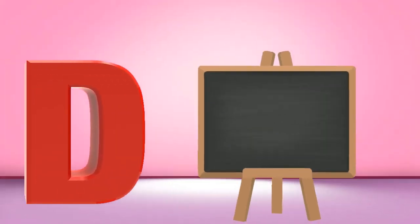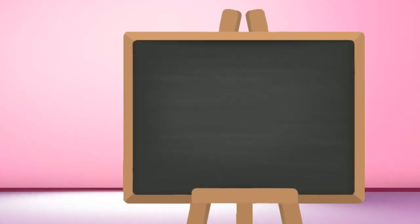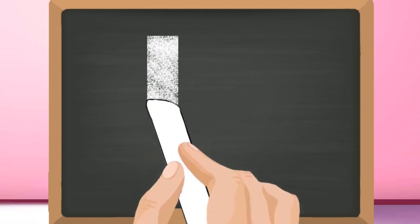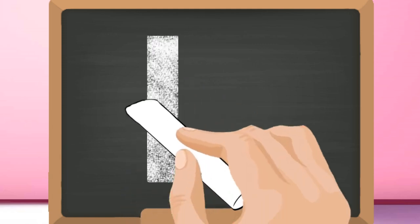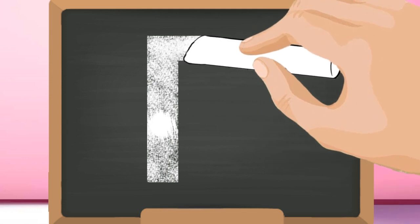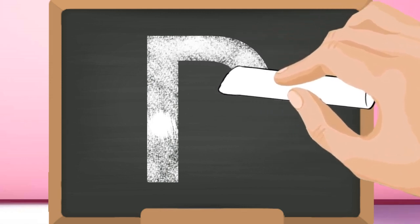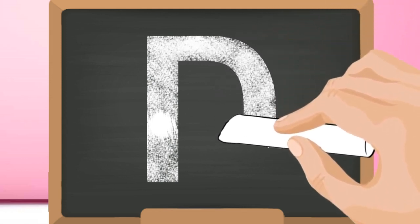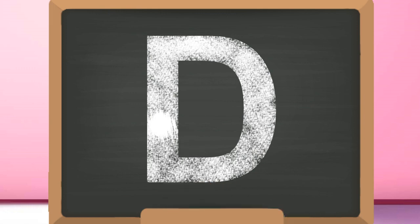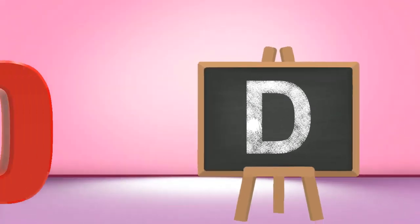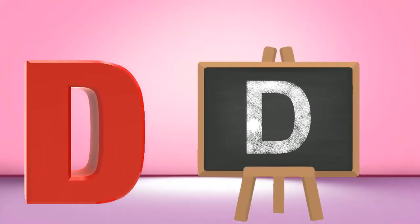D, capital D. Start from the top and draw a standing line down. Go again to the top and draw a curve till the bottom. Capital D.